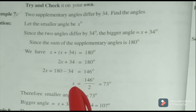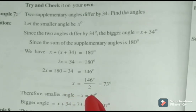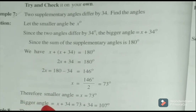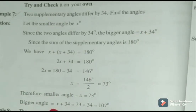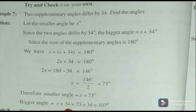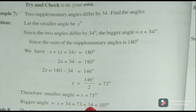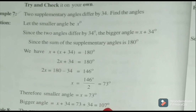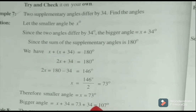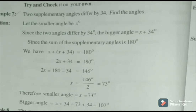Therefore the smaller angle X equals 73 degrees. The bigger angle X plus 34 equals 73 plus 34, that is equal to 107 degrees.